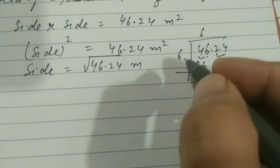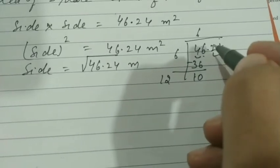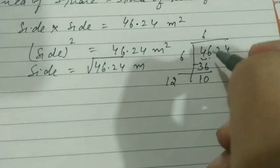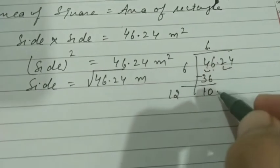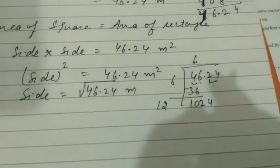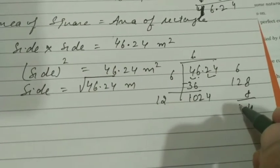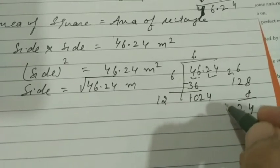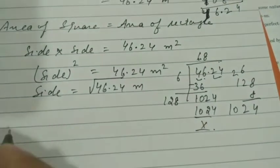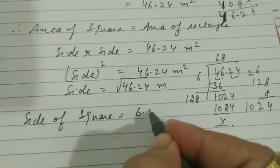46 minus 36 gives us remainder. The new divisor becomes quotient plus divisor: 6 + 6 = 12. The decimal point is noted and we bring down 24, giving 1024. Since 12 is less than 1024, we see how 128 × 8 = 1024: 8×8 = 64, 8×2 = 16 plus 6 = 22, 8×1 = 8 plus 2 = 10. So 128 × 8 = 1024, remainder zero. The side of the square is 6.8 meters.